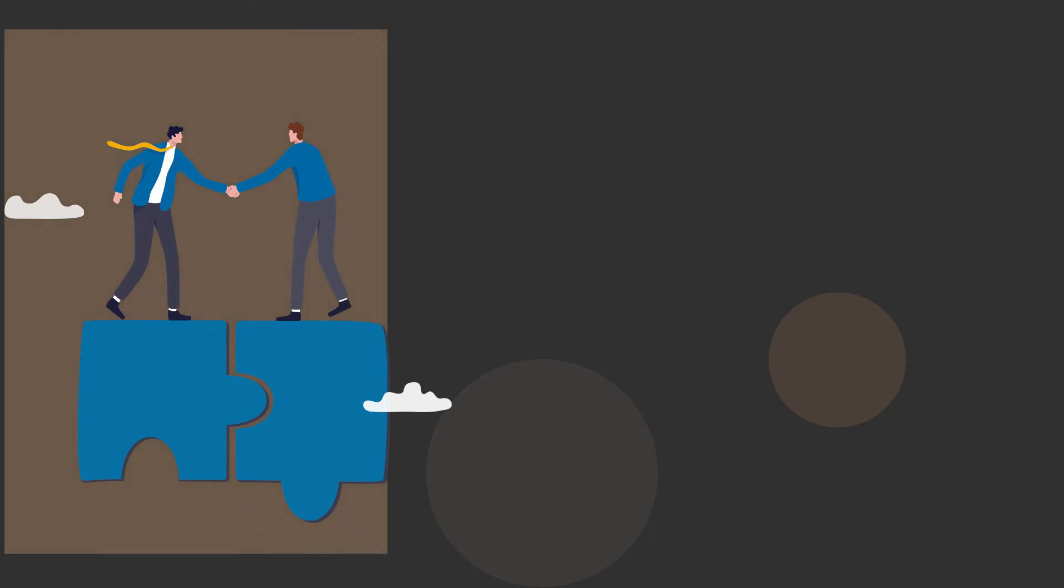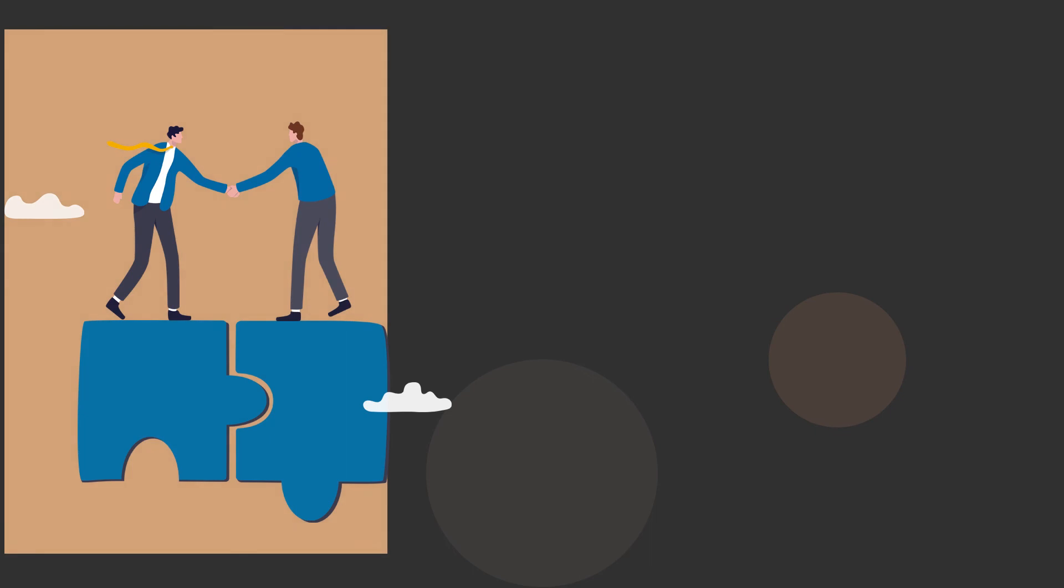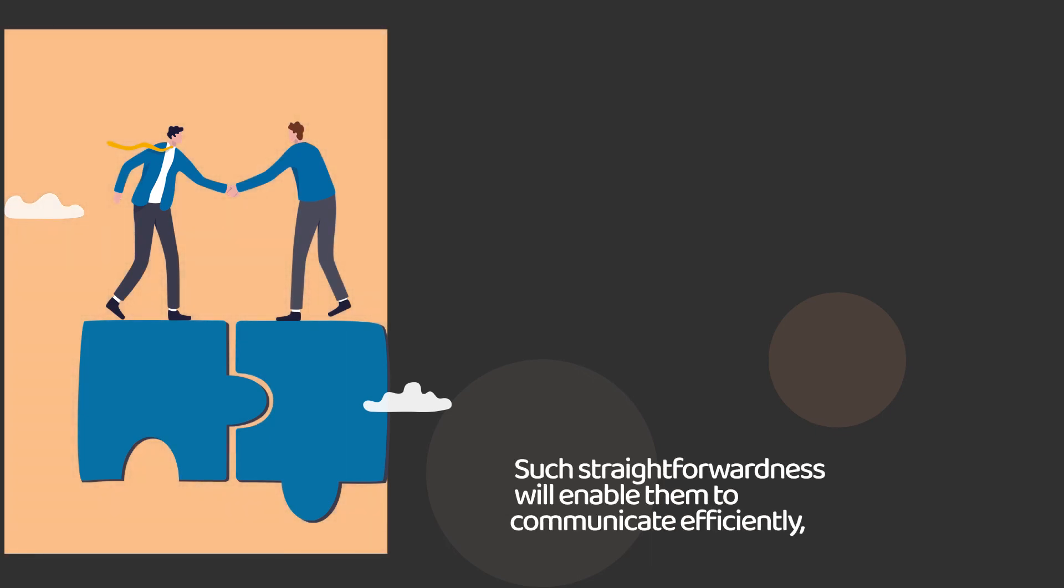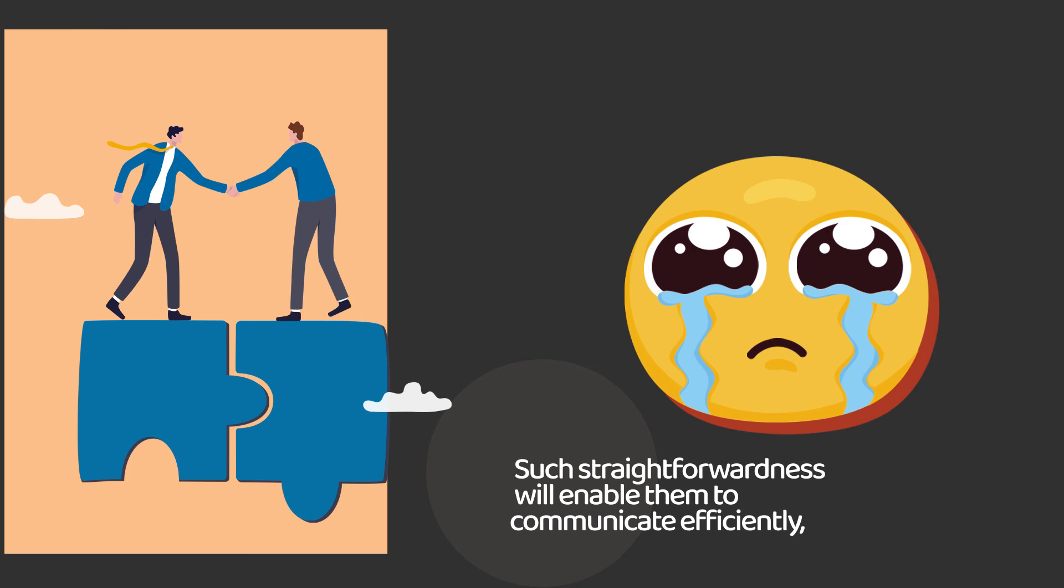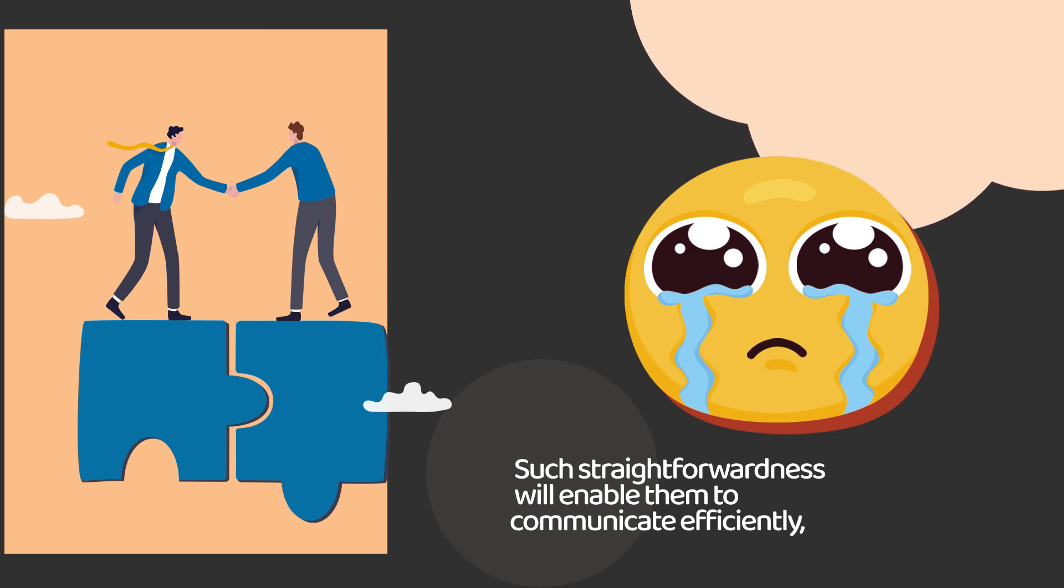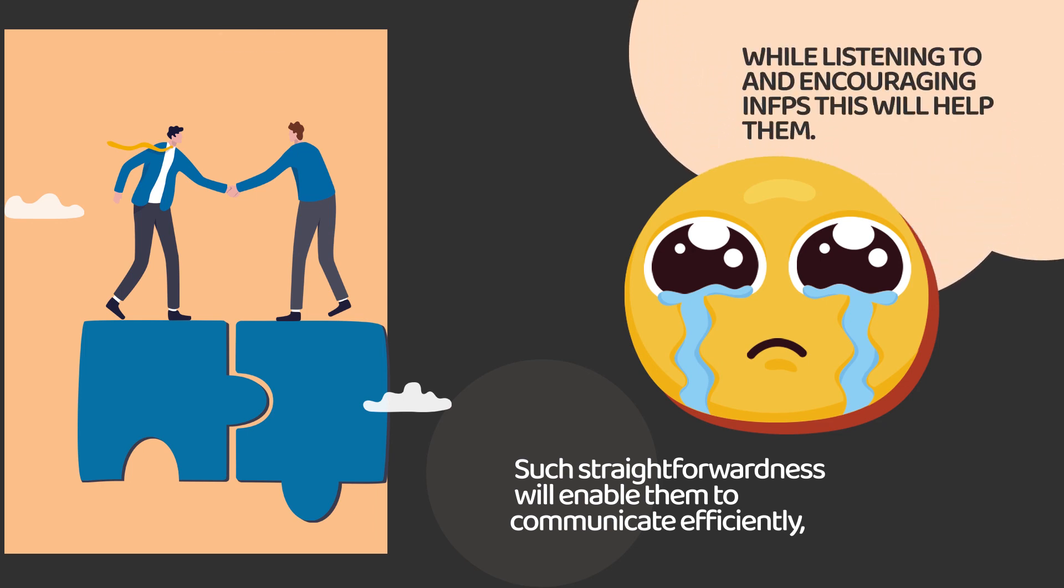Since ESTPs love being logical in such cases, the INFP should be direct and honest with ESTPs. Such straightforwardness will enable them to communicate efficiently, thereby avoiding the use of overly emotional phrasing that the partner won't appreciate. Again, ESTPs should focus on sensitively communicating their perspective while listening to and encouraging INFPs. This will help them.